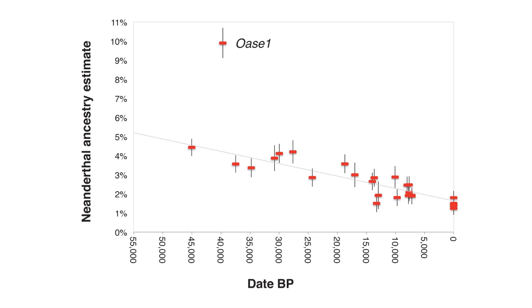The three big changes we can see in the genetic data: first, Neanderthal ancestry decreases gradually over time from around 45,000 years ago to the present, starting at about three to six percent and decreasing to one to two percent.